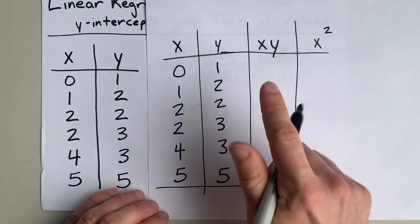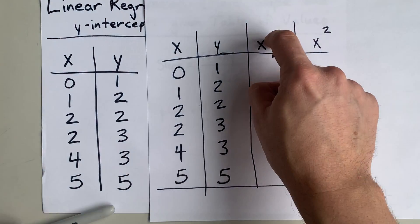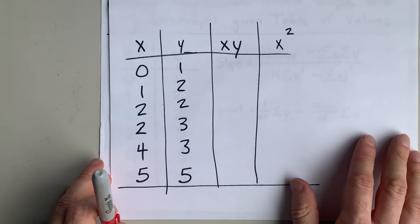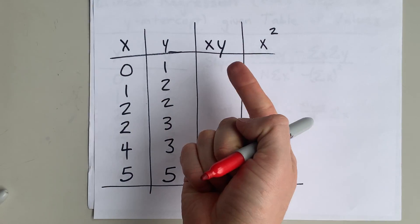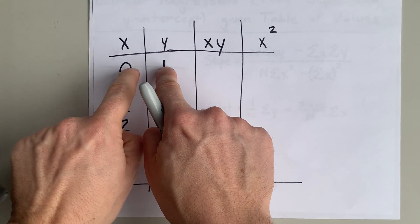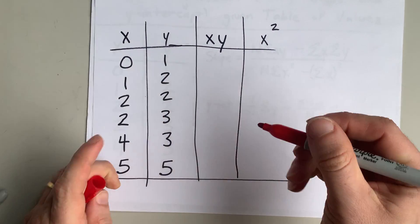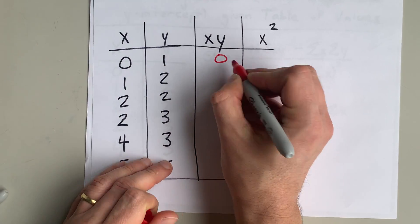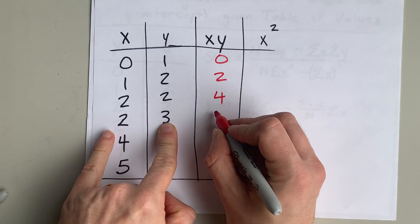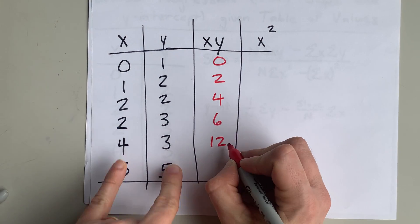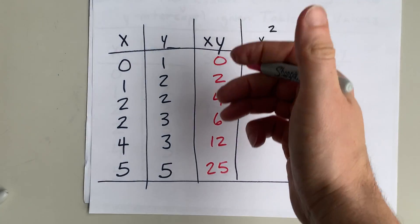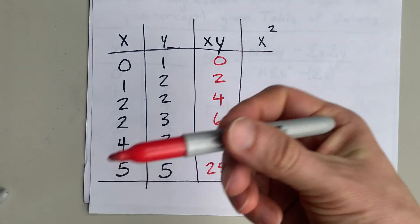For the x·y column, take each x and multiply it by its corresponding y. So 0 times 1, that times that, that times that — multiply each pair together and put the result in the column. If you're using a calculator, pause the video.